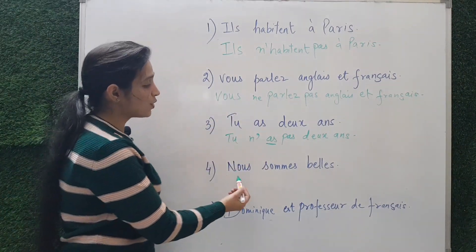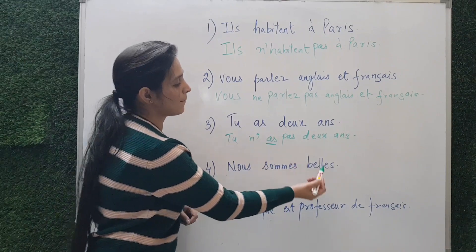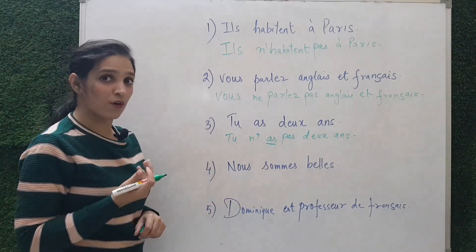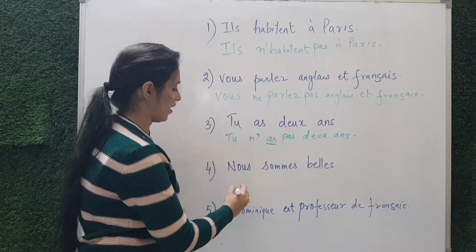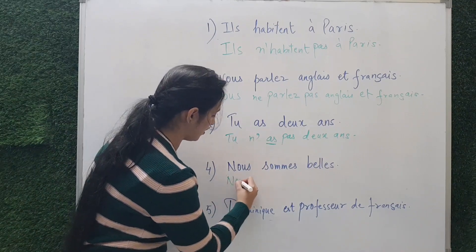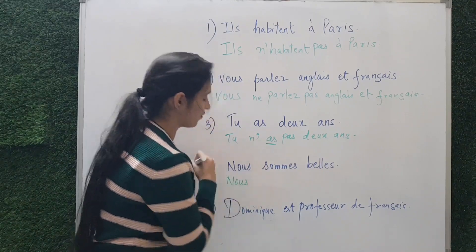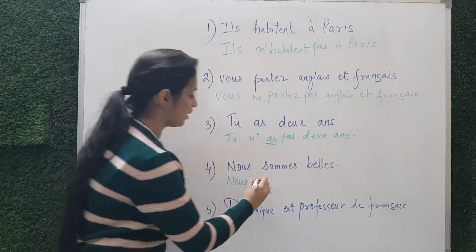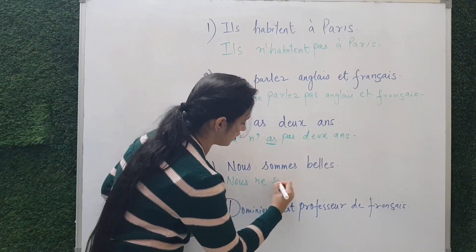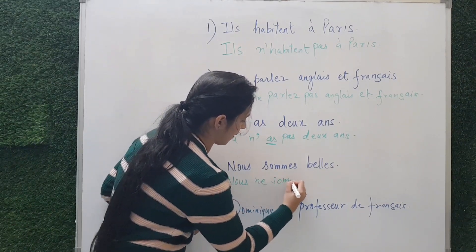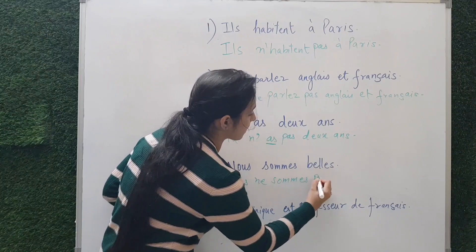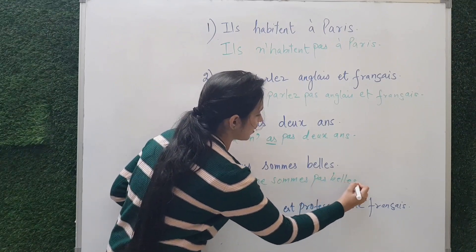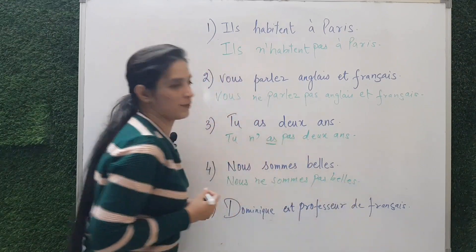Next: 'Nous sommes beaux' — 'We are beautiful.' The verb is 'sommes.' We put 'ne' and 'pas' before and after the verb: 'Nous ne sommes pas beaux' — 'We are not beautiful.'